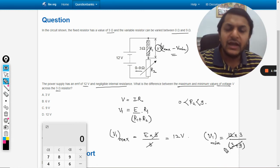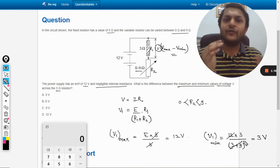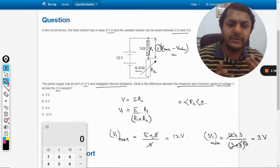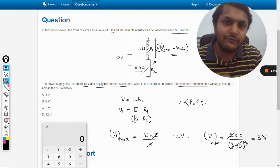Which will become 12, and we will cancel it. So our minimum value of the potential difference across R1 is coming out to be 3 volts. And according to the question, what we wanted was the difference of maximum and minimum.